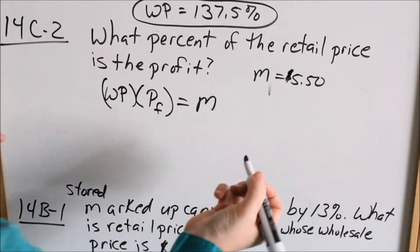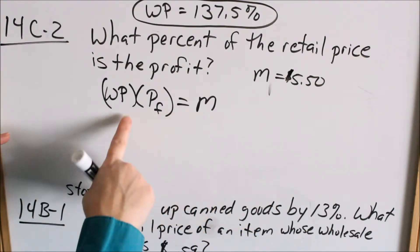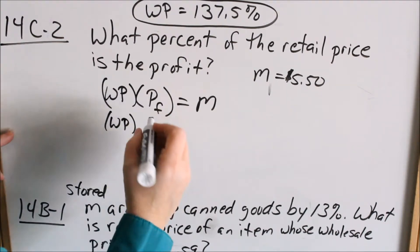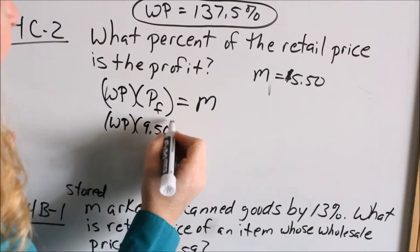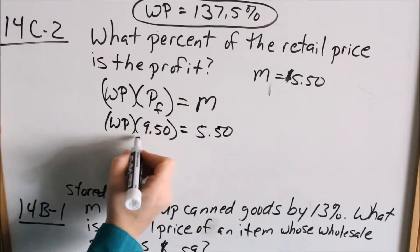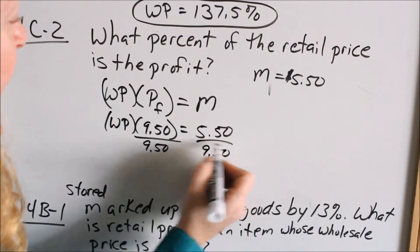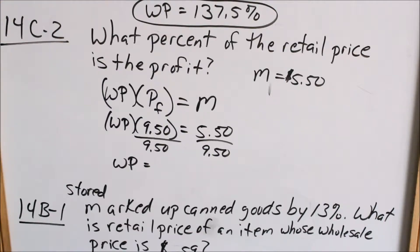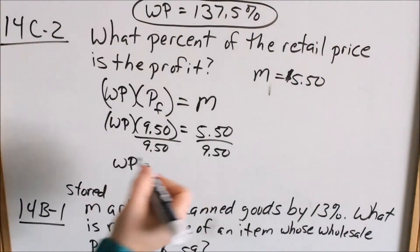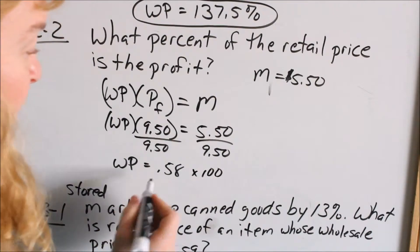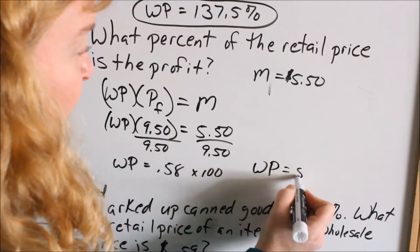We don't know the percent, so we leave that. We know the final price is $9.50 and the markup was $5.50. To solve for the percentage, divide both sides by $9.50. So WP equals $5.50 divided by $9.50, which comes out to 0.58 — but that's a decimal, not a percentage. Multiply by 100, and the percentage is 58%.